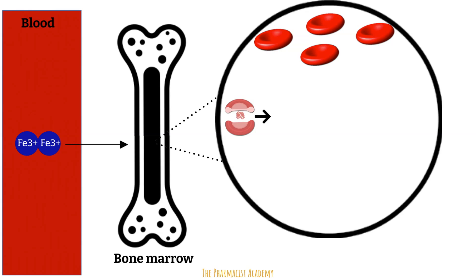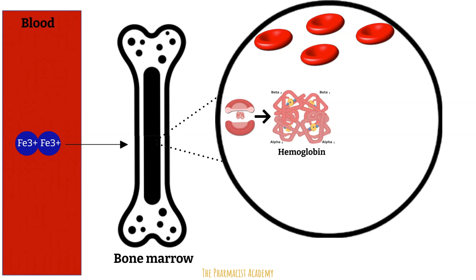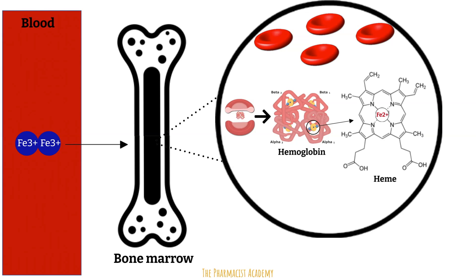Inside red blood cells, we have a protein called hemoglobin. Hemoglobin is a combination of two things: globular proteins, also known as spherical proteins, and heme, which is a ring-shaped molecule with an iron atom right in the middle. This is where oxygen binds within the red blood cells, and then the red blood cells transport the oxygen all over the body. As we can clearly see, iron plays a vital role in our everyday lives.